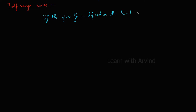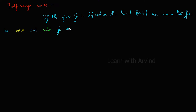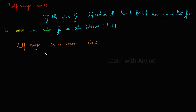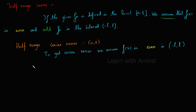If the given function is defined in the interval 0 to L, and if you are asked to find half range sines and cosines, then we assume that the function f(x) is either even or odd in the interval minus L to L. We are just assuming that f(x) is even or odd. For half range cosines series, the interval ranges between 0 to L, and to get the half range cosines series, we assume f(x) is an even function in the interval minus L to L.